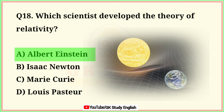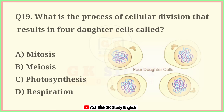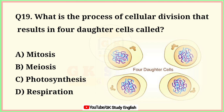Question number 19. What is the process of cellular division that results in four daughter cells called? A. Mitosis. B. Meiosis. C. Photosynthesis. D. Respiration. Correct answer is option B. Meiosis.